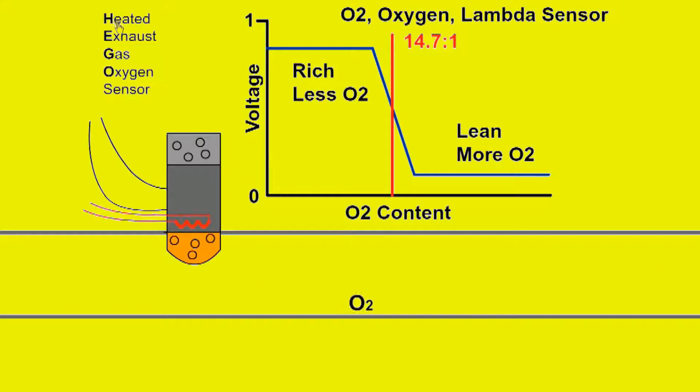Sometimes a HEGO sensor is used. This includes a heating element which gets the sensor up to working temperature faster.